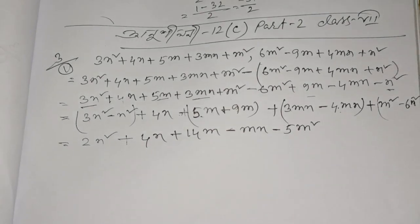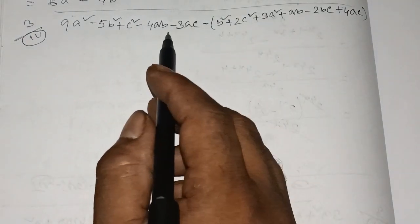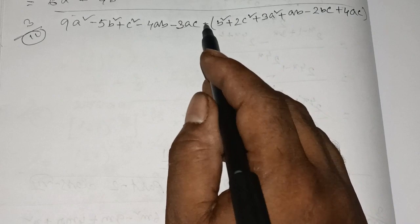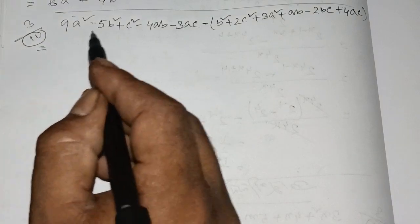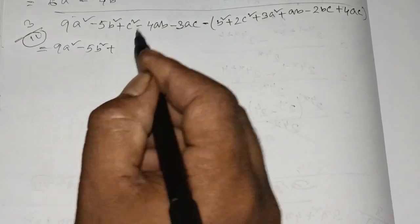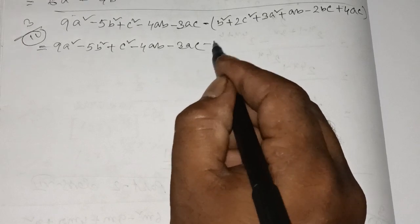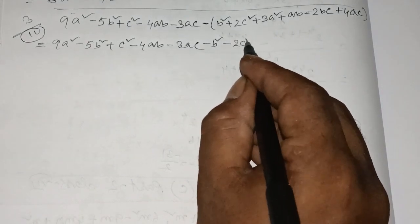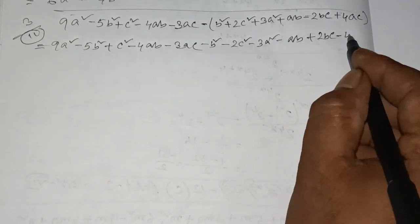Here we have two numbers. I have 9a squared minus 5b squared plus c squared minus 4ab minus 3ac plus b squared. So here we have to write a letter line. To write a letter line, the name your 4: so 9a squared, 5b squared plus c squared minus 4ab minus 3ac plus b squared minus 4ac plus bc minus 4ac.